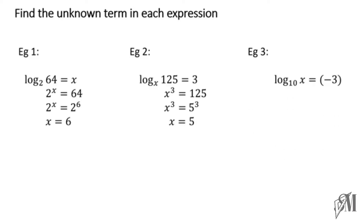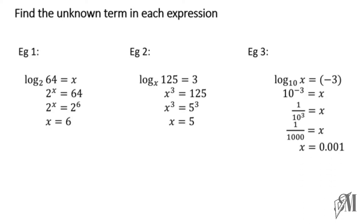Moving on to the third example: log base 10 of x is equal to minus 3. Writing this in index form, 10 is the base and the power is minus 3, so 10 to the power minus 3 is equal to x. Since the power is negative, we write it as a fraction: 1 over 10 to the power 3. Therefore x is equal to 1 over 1000, which is 0.001.